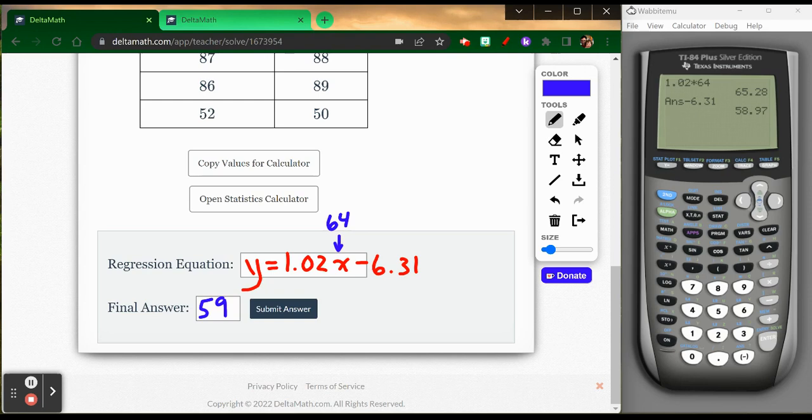And there's my first problem. Y equals 1.02X minus 6.31 is the equation. And my final answer, this is using that equation to predict what the score would be, is 59.